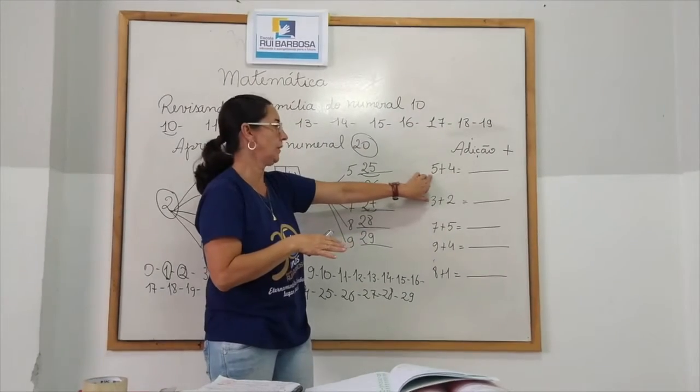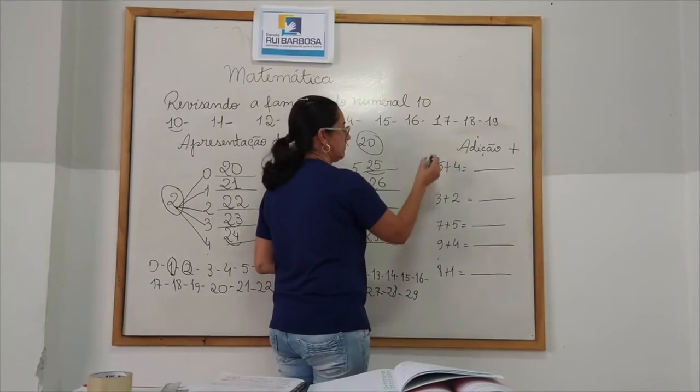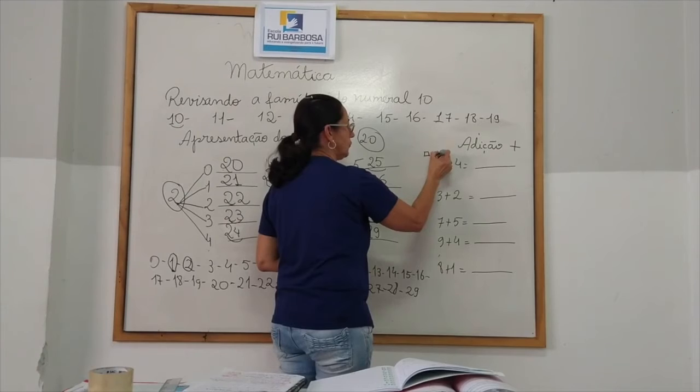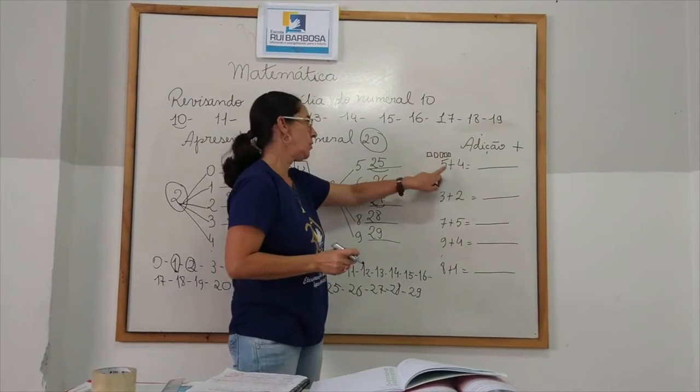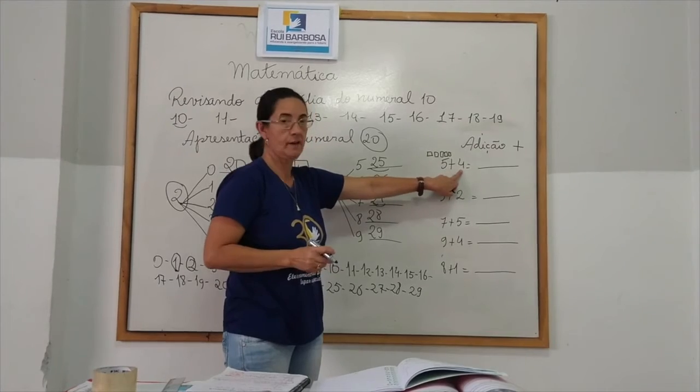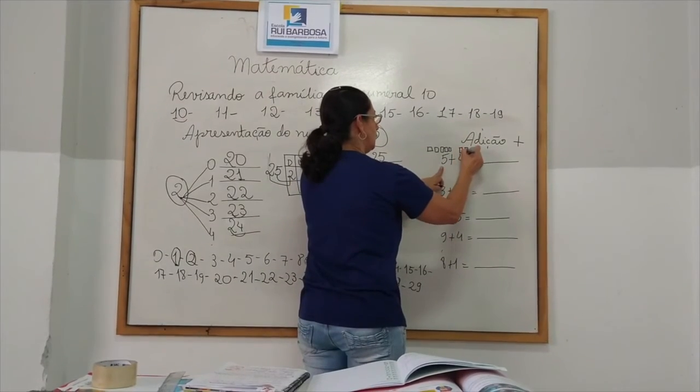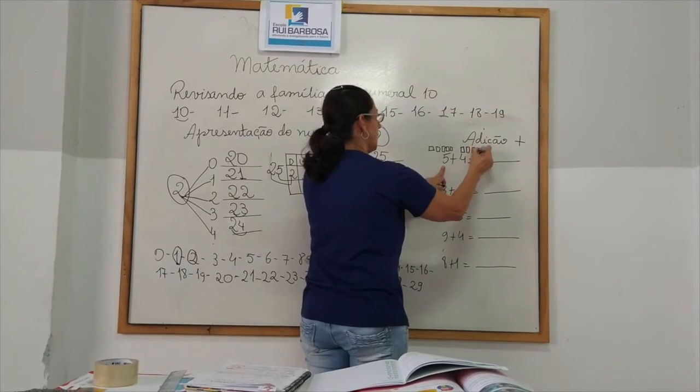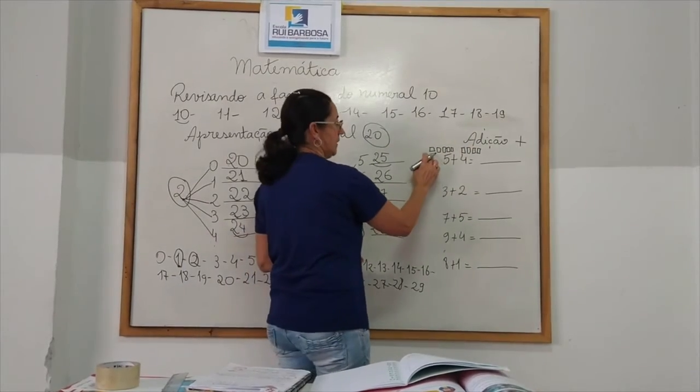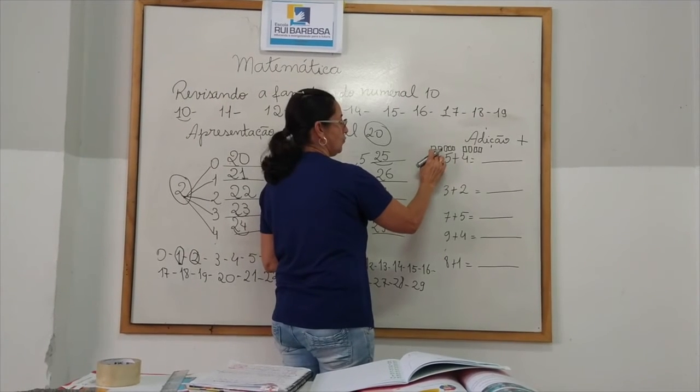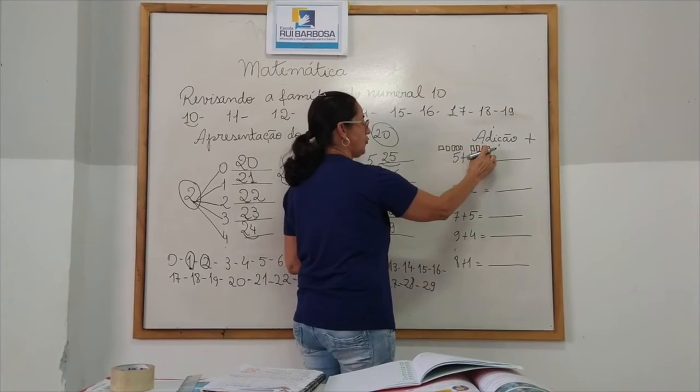Então, aqui eu tenho que número 5. Então, você vai poder desenhar. 1, 2, 3, 4, 5. 5 mais, que não é esse? 4. Então, 5 unidades mais 4. 1, 2, 3, 4. Depois que eu desenho, eu vou contar. 5 unidades mais 4, 1, 2, 3, 4, 5. 6, 7, 8, 9.